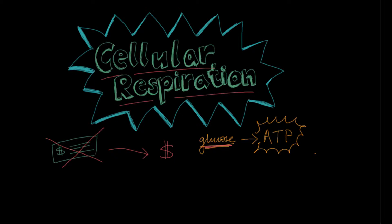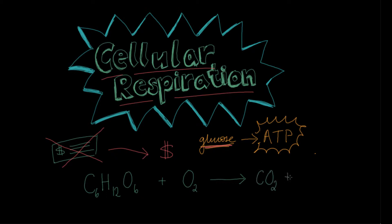Let's look at the equation for cellular respiration. The reactants are glucose — C6H12O6 — and oxygen. The products, what we get out the other end, are carbon dioxide (CO2), water, and about 32 to 38 ATP molecules.